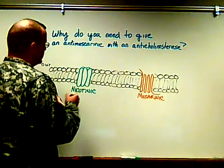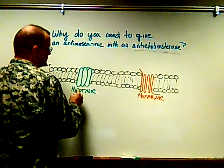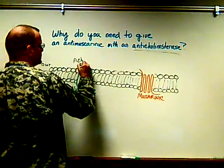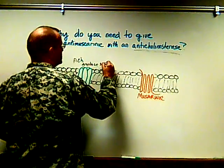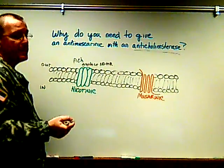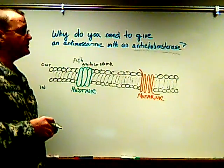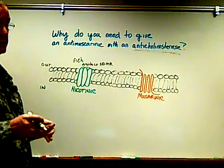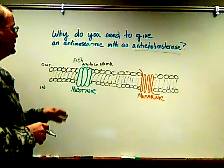We're giving the anti-cholinesterase to build up our levels of acetylcholine, to be able to displace our non-depolarizer muscle relaxant. So we build up our acetylcholine, but the problem is we're not just building up acetylcholine at the neuromuscular junction. We give this anti-cholinesterase and it binds all of the cholinesterases — pseudocholinesterase, true cholinesterase — so we have all the acetylcholine.